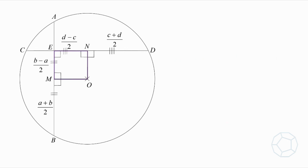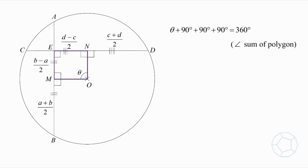Now, let's focus on the purple quadrilateral O-M-E-N. We have three right angles here. For the fourth one, we can show that it is also 90 degrees easily. The reason is the angle sum of a polygon. Because there are four right angles, therefore O-M-E-N is a rectangle.